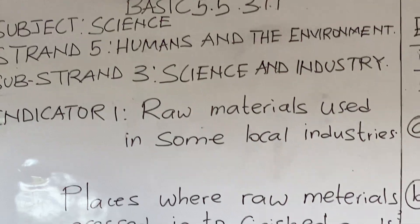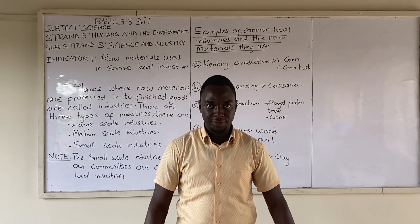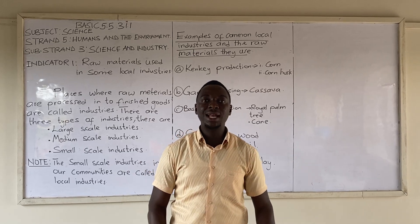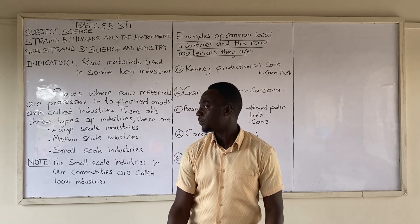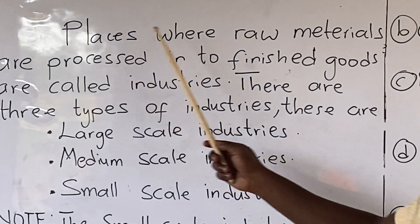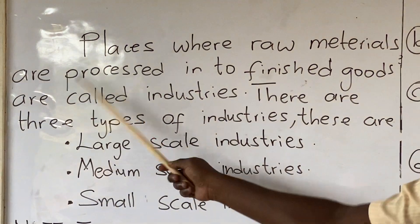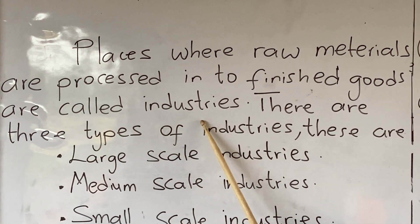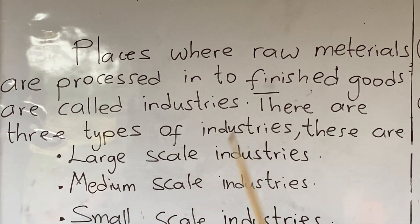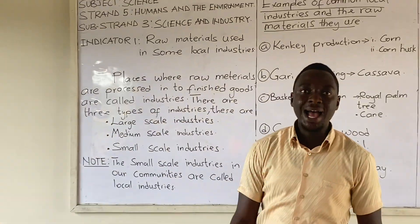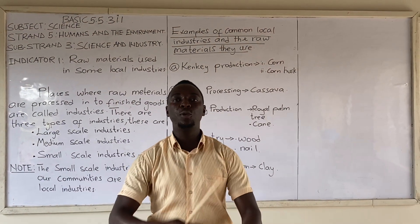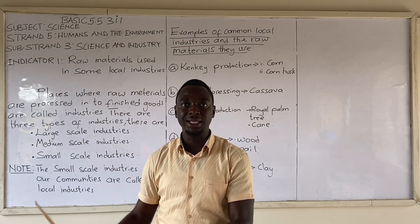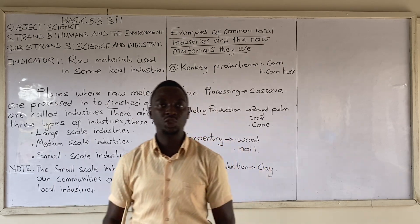The key word here is industry. Let's look at the meaning of industry. Any place where raw materials are processed into finished goods for consumption or usage is called an industry.